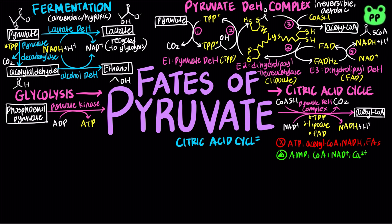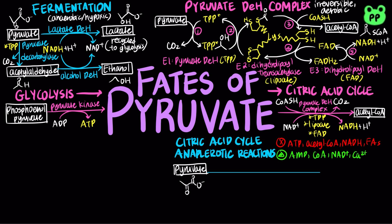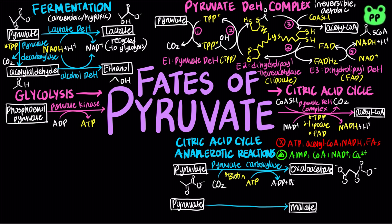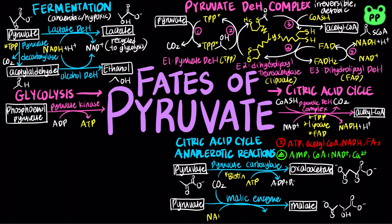Pyruvate can also participate in anaplerotic reactions of the citric acid cycle. Anaplerosis is the act of replenishing intermediates that have been extracted for biosynthesis. Pyruvate can be directly converted to two different intermediates of the citric acid cycle: it can be converted to oxaloacetate by pyruvate carboxylase, which requires biotin as a cofactor for carbon dioxide transfer and cleavage of an ATP molecule, or it can be converted to malate by malic enzyme, coupled to the oxidation of NADPH to NADP+ or NADH to NAD+.